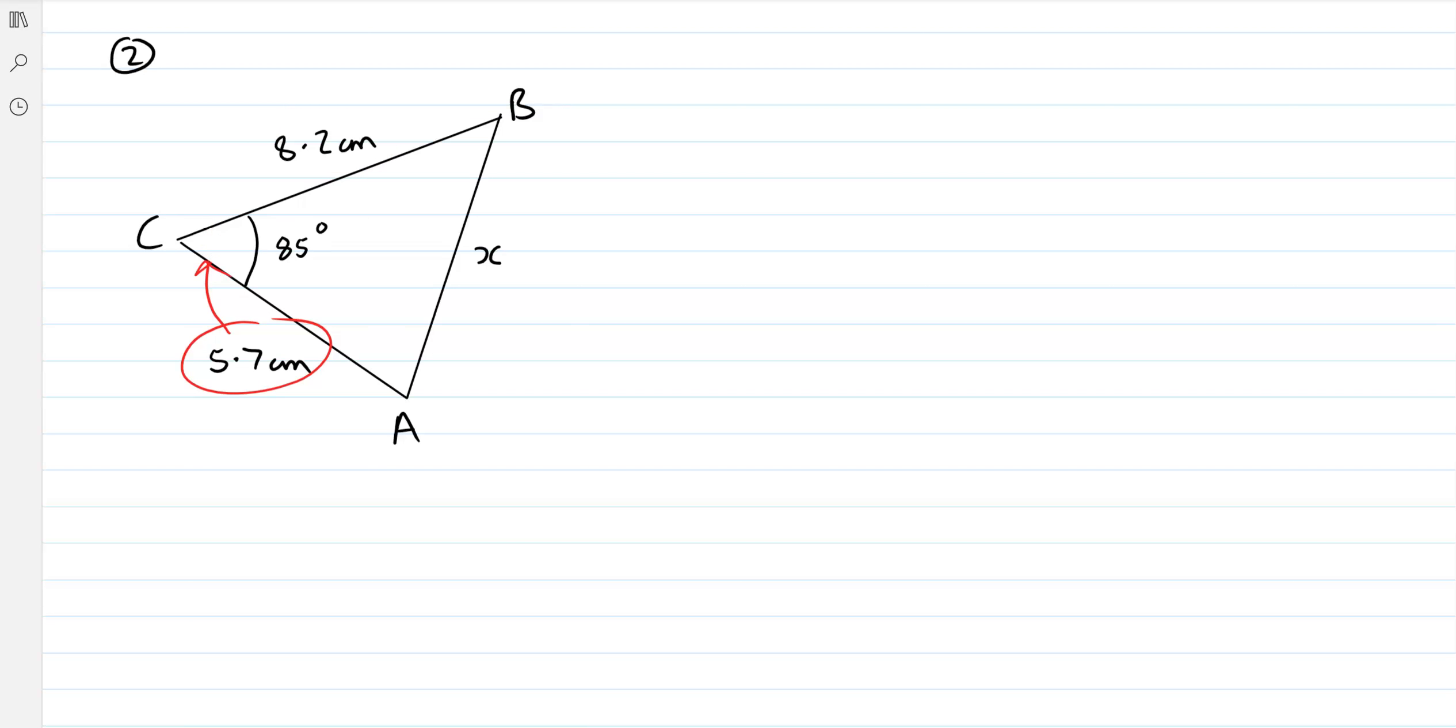So go straight into using cosine rule. First thing to do is write it down. So a squared equals b squared plus c squared minus 2bc cos A.